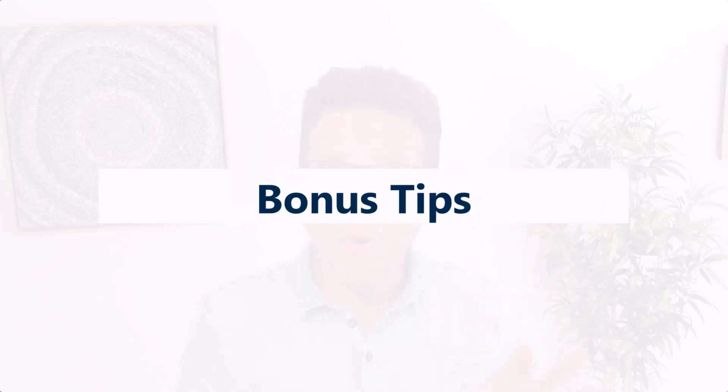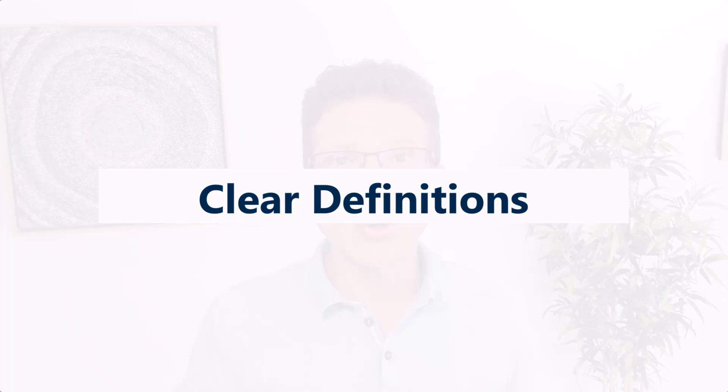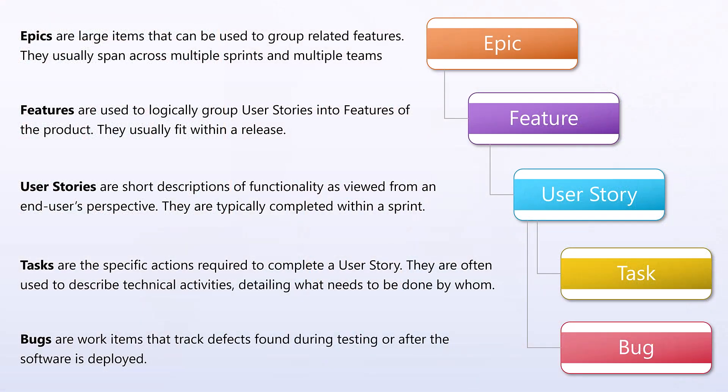As promised, here are some best practices when using epics, features, user stories, and so forth. The first one: make sure to have clear definitions at the beginning of your project of what those work item types are, and share it with your clients or stakeholders so you are all aligned on what is an epic, what is a feature, what is a user story. Use examples to illustrate the concept — you can reuse the examples I shared, or use examples from your own project. Make sure definitions are established early so you can easily create those work item types throughout your project.